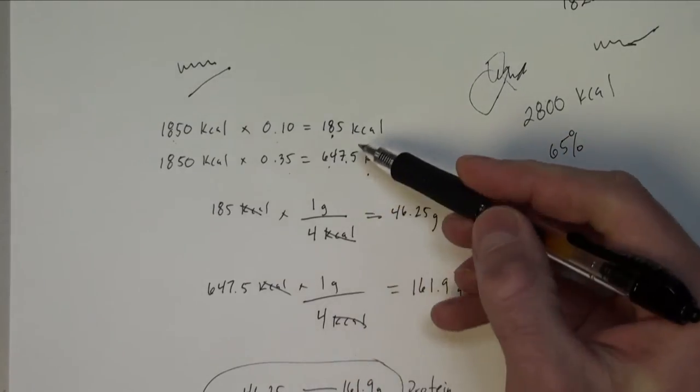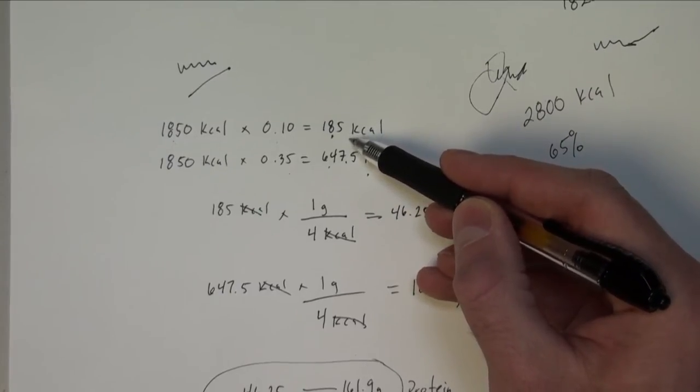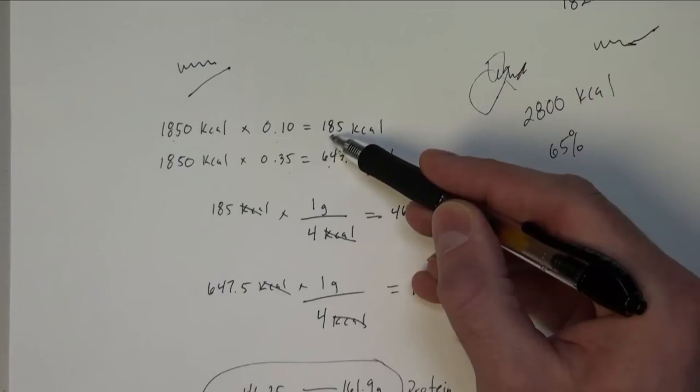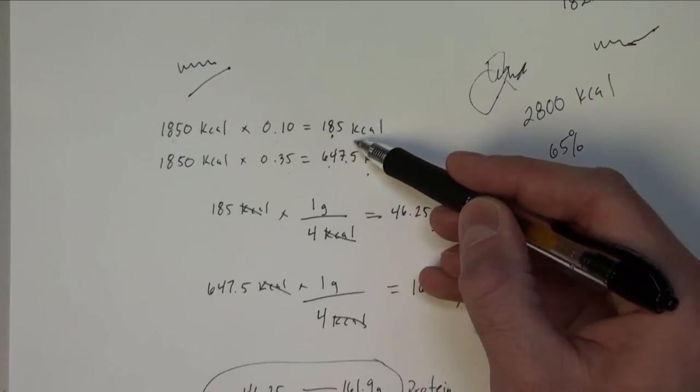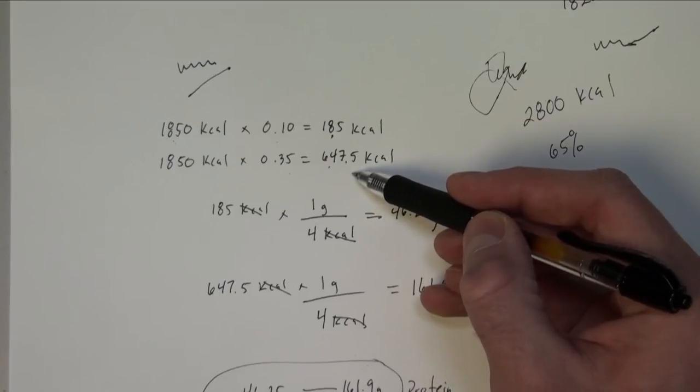And so now what we've just done is here is our distribution range in terms of proteins, in terms of how many calories should be coming from proteins. So we should have between 185 kilocalories to 647.5 kilocalories coming from protein.